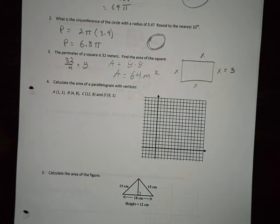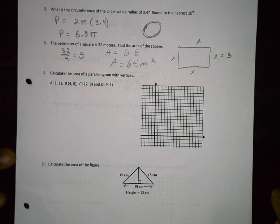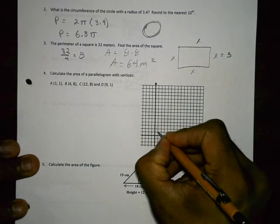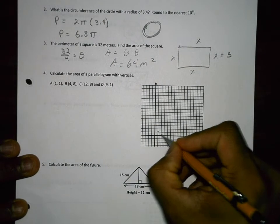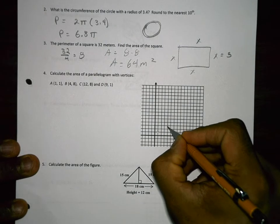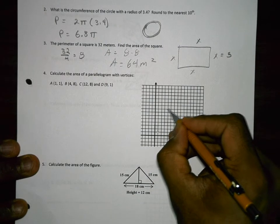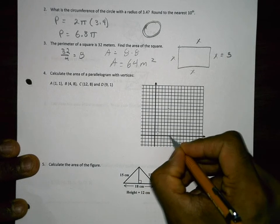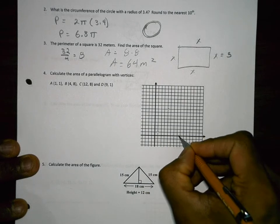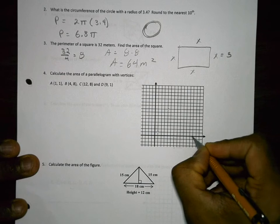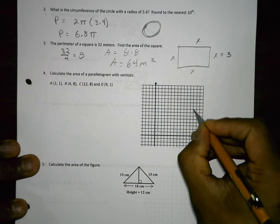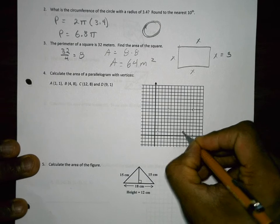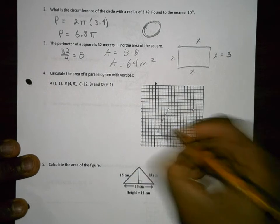Number 4. Calculate the area of a parallelogram. They're telling you it's a parallelogram. We've got the vertices at (1,1), (4,8), (12,8), and (9,1). So there's my parallelogram.